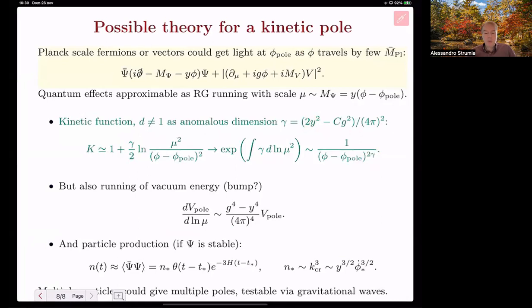However, the same physics also gives at two-loop a running of essentially the inflaton potential around the pole. Furthermore, one can have real effects like particle production that can be easily estimated and was studied long ago. If these particles are stable, they can back-react modifying the effective potential.